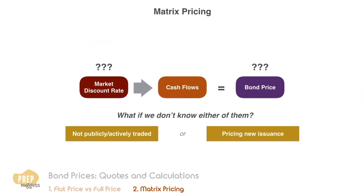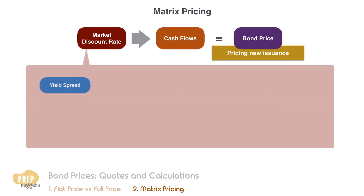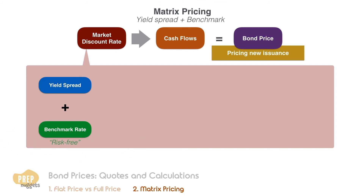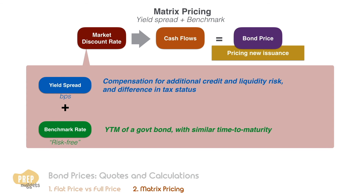We've looked at one method to value bonds that are privately or not actively traded. Let's look at another method that is more often used for pricing new issuances. The principle is to get an estimate of the required yield spread over the benchmark rate. The benchmark rate is considered the risk-free rate, typically derived from the yield to maturity on a government bond having a similar time to maturity. The yield spread is the compensation required by investors for the additional credit risk, liquidity risk, and tax status of the bond relative to the government bond. Yield spreads are often stated in basis points.